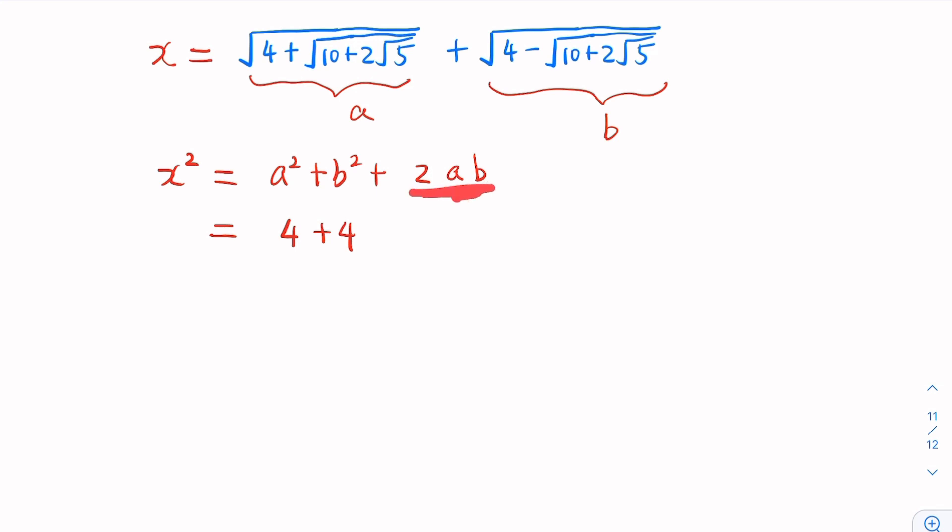Now, how about 2ab here? x plus y times x minus y equals x squared minus y squared. So that is square root. So here, 4 plus and 4 minus. So it becomes 4 squared, which is 16, minus the whole thing squared. The square root goes away when you square it. So this becomes 10 plus 2 square root of 5. Let's simplify this. So it becomes 16 minus 10, that would be 6 minus 2 square root of 5.